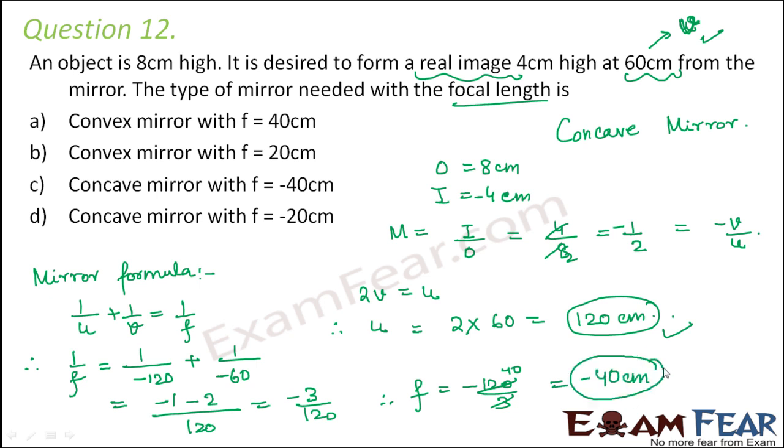So the focal length is minus 40 centimeters and the mirror is a concave mirror. Option C is correct.